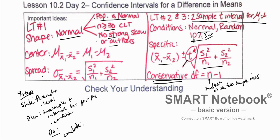What we're going to do here is talk about confidence intervals for a difference in means, and we're going to talk about a plan for a two-sample t-interval for the difference in mean 1 minus mean 2. The first thing is we're going to go through the four-step process: we're going to state the parameter and level of significance, and we're going to plan a two-sample t-interval for the difference in means.